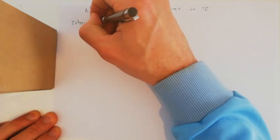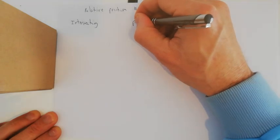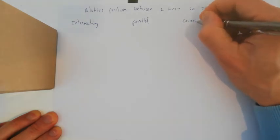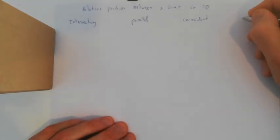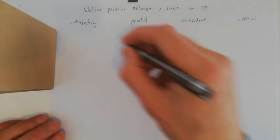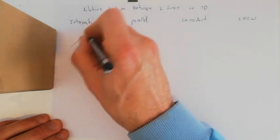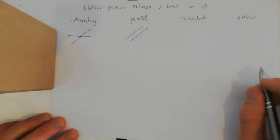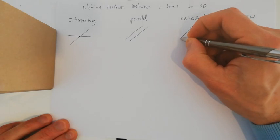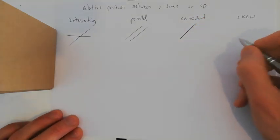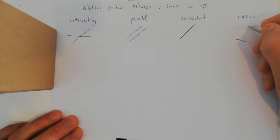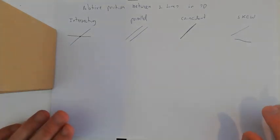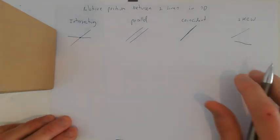The possibilities are: two lines in three dimensions can be intersecting, parallel, coincident, or skew. Skew means the lines cross each other at different heights and therefore do not have any common point.